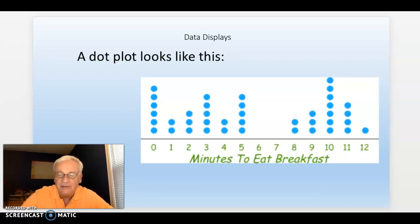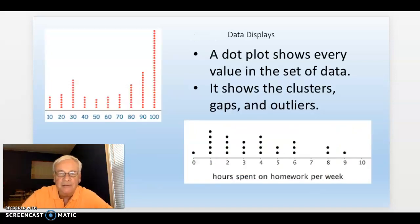In a dot plot, it shows every value in the set of data. It shows the clusters, the gaps, and the outliers too. Every single data point is shown in a dot plot.